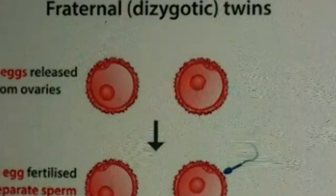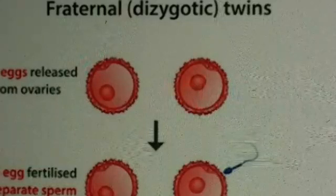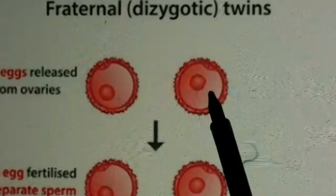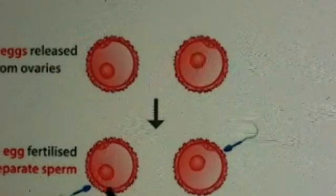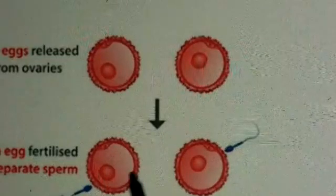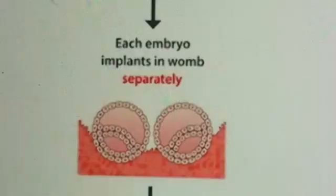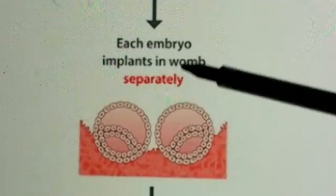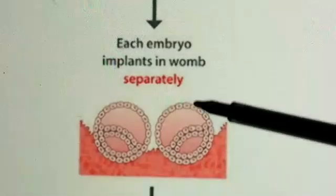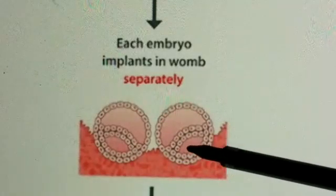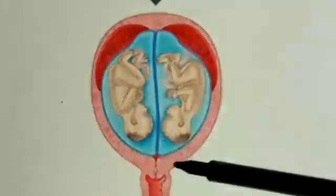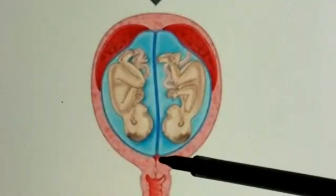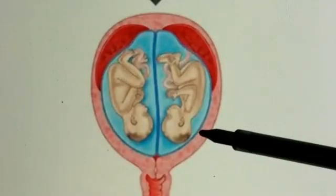The next type is dizygotic twins. In dizygotic twins, the woman releases two ovums at the same time from the ovaries. As you can see in the figure, two eggs are released and fertilized by two different sperms. These two fertilized embryos are implanted separately in the same womb. Two different babies grow, and two different placentas are created — the placenta provides nutrition to the growing babies.